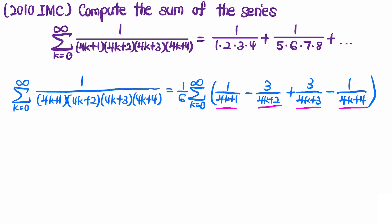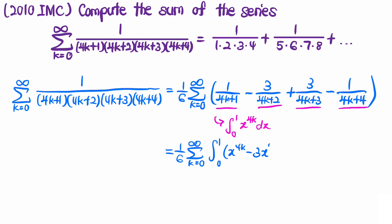If you are familiar with integration, you'll quickly realize that for example the first term is the integral from 0 to 1 of x to the power of 4k dx. So we can actually turn the inner part of the summation into an integral. We have 1/6 times the summation from k=0 to infinity of the integral from 0 to 1 of: x^(4k) minus 3x^(4k+1) plus 3x^(4k+2) minus x^(4k+3) dx.